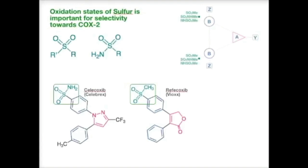What I want to point out here is that the oxidation states for sulfur is important for selectivity towards COX-2 enzyme. Sulfoxides and sulfonamides do not actually help in enhancing the activity. Methyl sulfonyl group in this case and sulfonamide is quite good for the activity for COX-2 inhibitors.